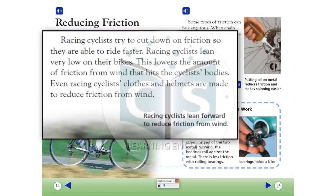Reducing friction. Racing cyclists try to cut down on friction so they are able to ride faster. Racing cyclists lean very low on their bikes. This lowers the amount of friction from wind that hits the cyclists' bodies. Even racing cyclists' clothes and helmets are made to reduce friction from wind.